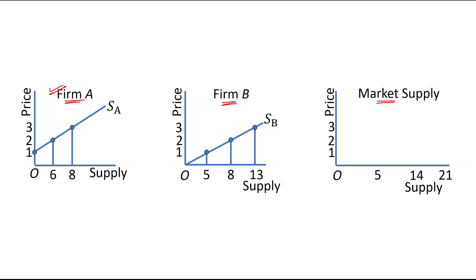Now for the market supply: at a price of rupees 1, market supply is 5 kg per month; at a price of rupees 2, market supply is 14 kg per month; and at a price of rupees 3, market supply is 21 kg per month. We join these combinations and this is the market supply curve.